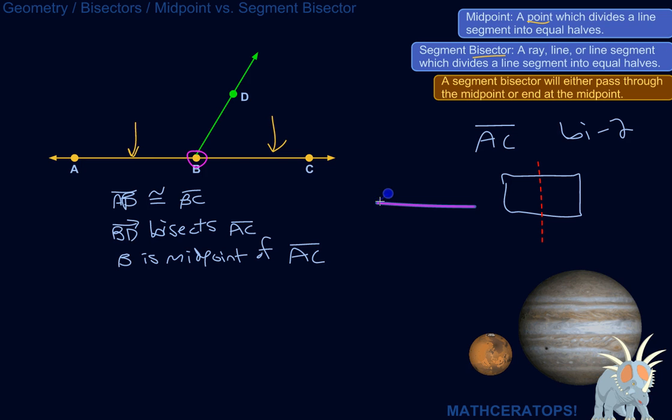If I've got a line segment here, like let's call it LM, and let's say this line here - I didn't draw that right - but let's say that this is a segment bisector. That segment bisector will include the midpoint. I might not have it labeled, but that midpoint has to be on the line or the ray or the line segment that's bisecting the line segment.